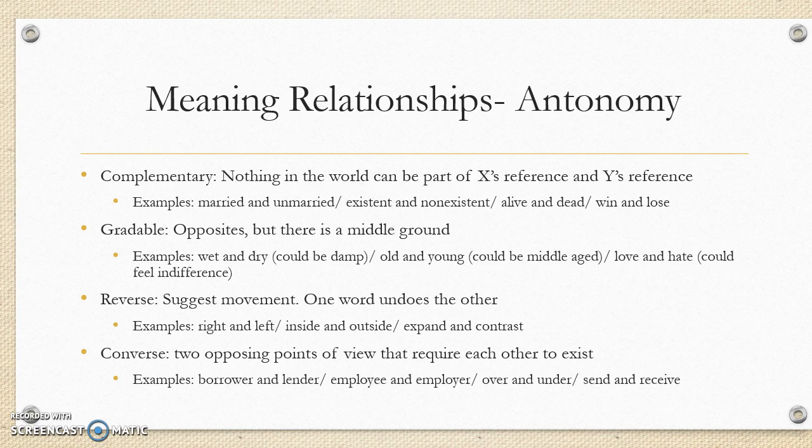Converse antonyms are two opposing points of view that require each other to exist — one cannot exist without the other. To have a borrower, you need a lender. To have an employee, you need an employer. For something to be over something, something else needs to be under it. And in order to send something, someone has to receive something.